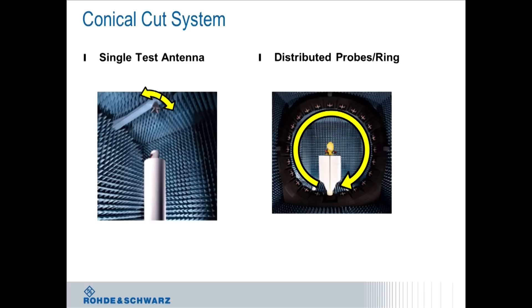So on the left side here is the single test antenna that we're utilizing. We have a single test antenna that is moving mechanically around the device under test in order to scan from an elevation perspective. On the other side is the distributed probes, or the ring approach, where you basically scan multiple probes electronically.